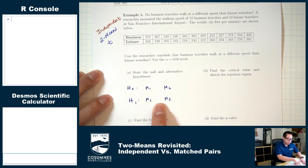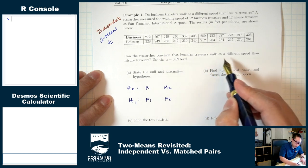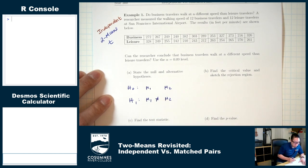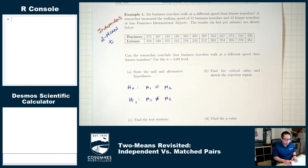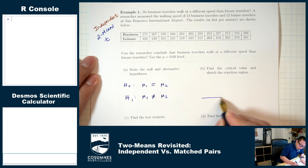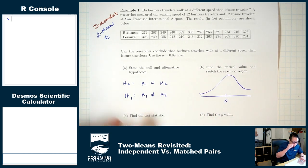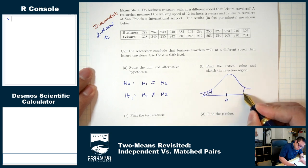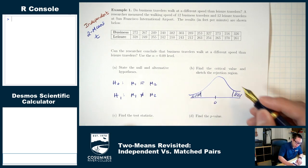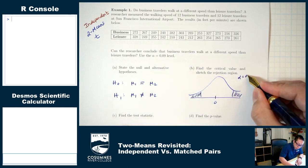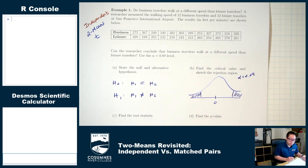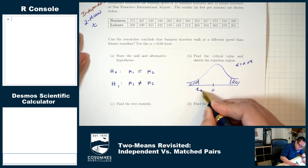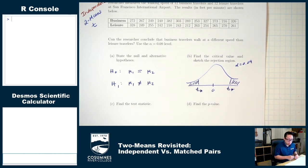What symbol goes in the middle? The question asks whether business travelers walk at a different speed — 'differs' means not equals. So H1 is mu1 ≠ mu2, and H0 always has an equal sign. Part B: draw your picture. Not equals means this is going to be shaded two tails. The shaded area is our alpha, which is 0.09 — left and right side together is 0.09. Our job is to find the T-star.